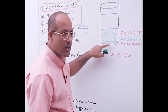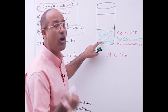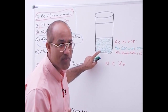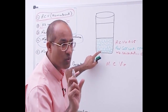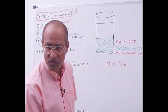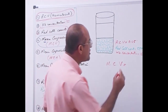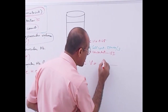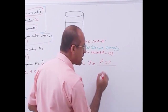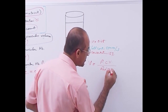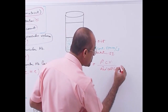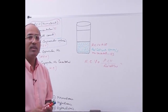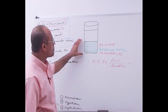Mean corpuscular volume is the total volume divided by the total number - it's not difficult at all. Total volume occupied by all RBCs divided by the number of RBCs gives you the volume occupied by one RBC. Mean corpuscular volume equals packed cell volume divided by red cell count.